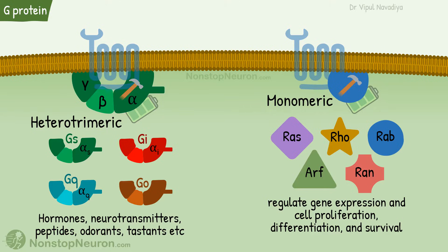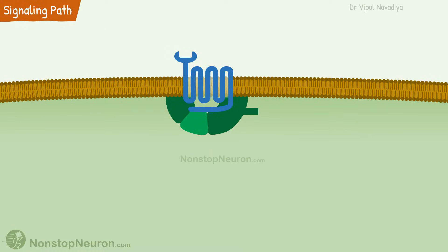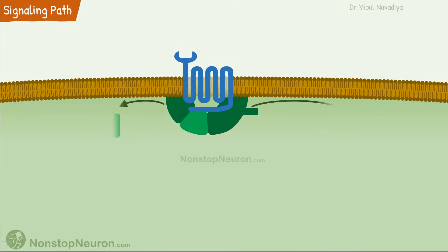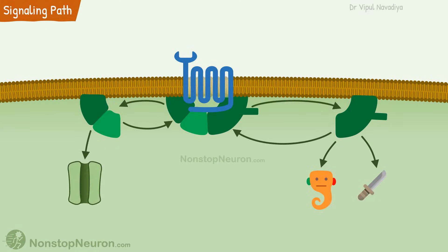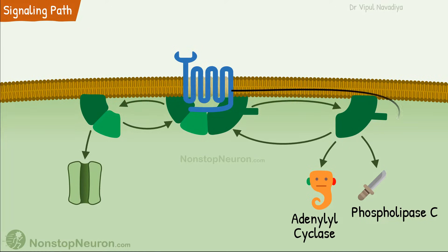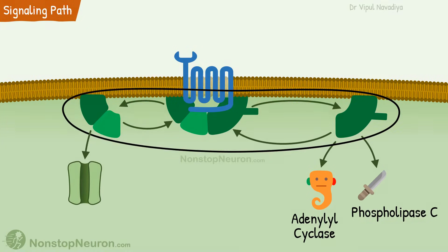This was some basic information about G-proteins. Now we will see the signaling pathway. During signaling, subunits of G-protein follow a cyclic path. As they go through the cycle, they affect different downstream pathways — for example, the adenylyl cyclase pathway and the phospholipase pathway. To keep the discussion simple, we will only focus on the cycle of heterotrimeric G-proteins in this video.